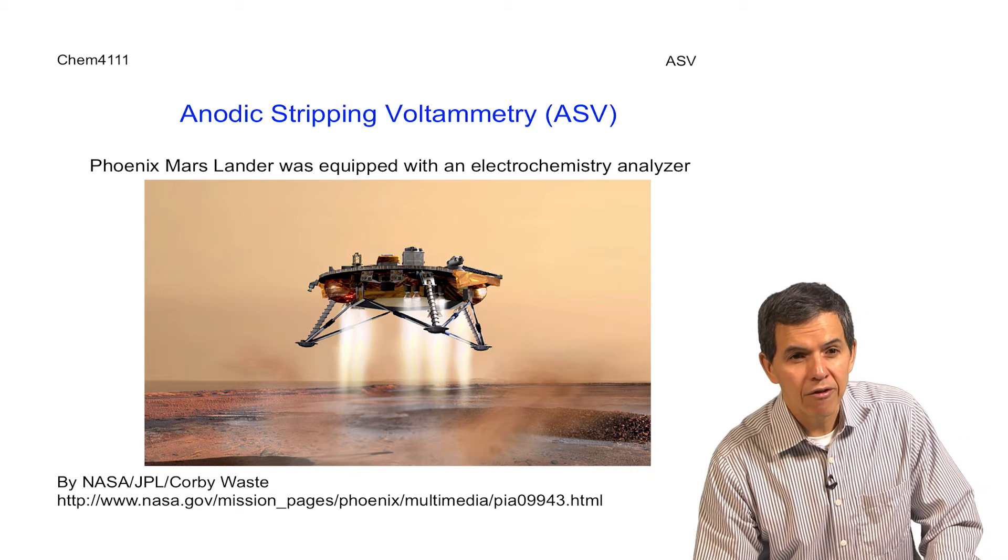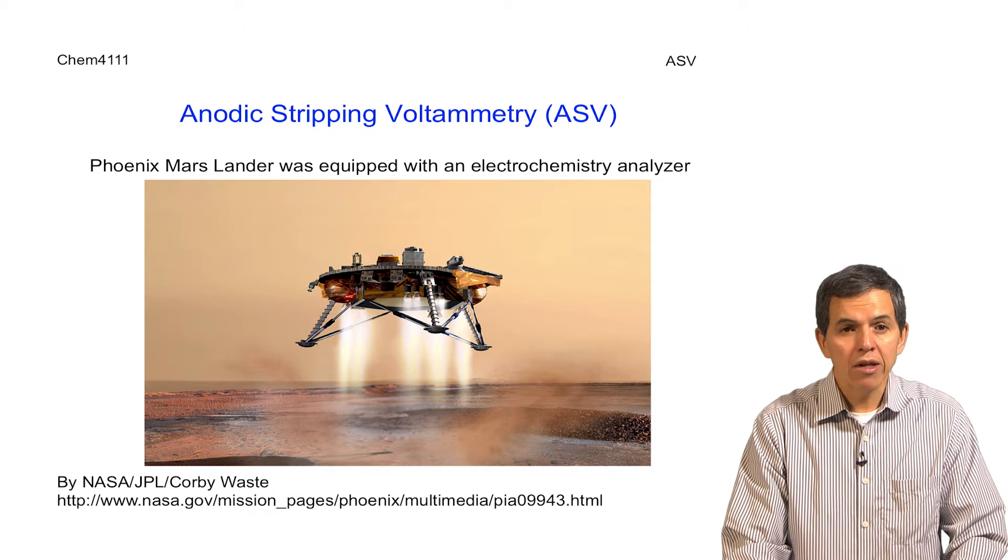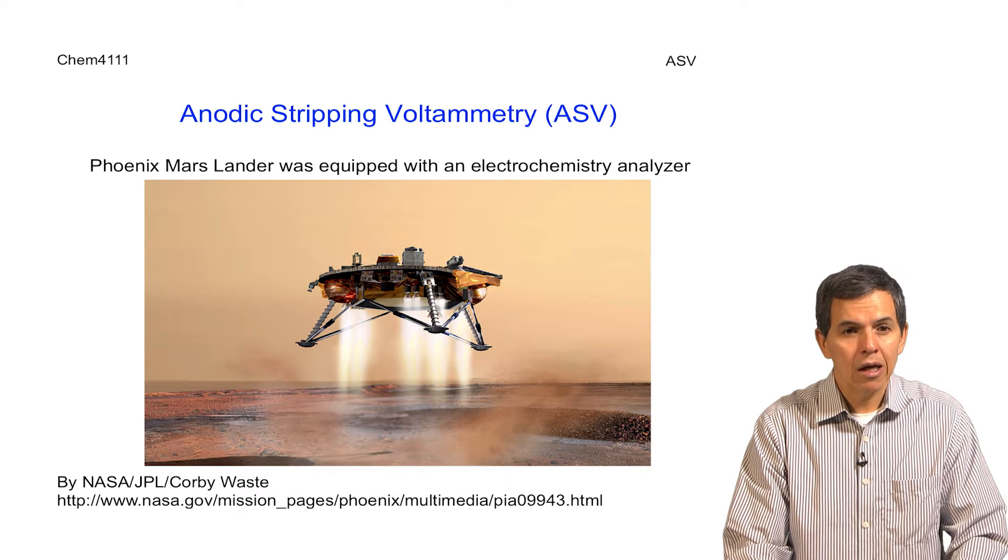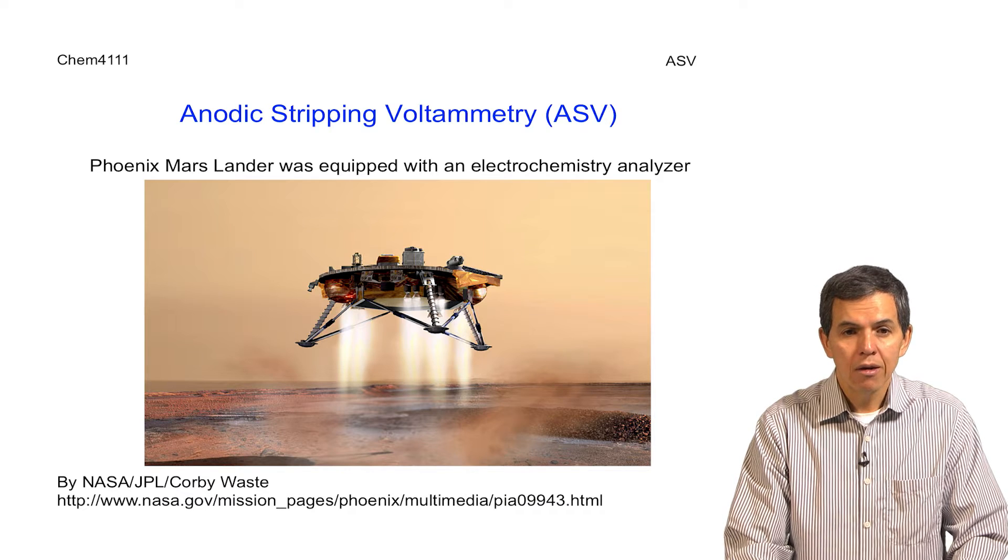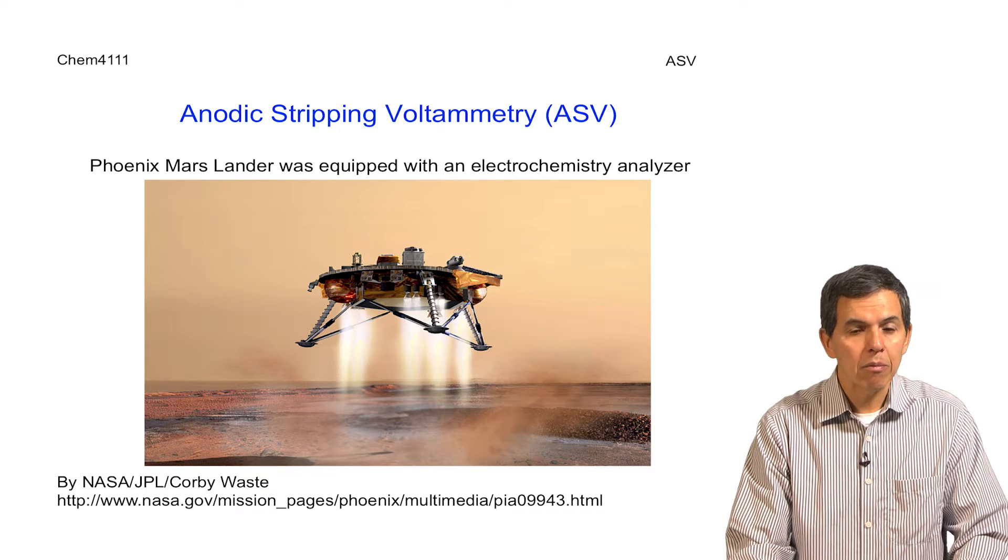Here's a picture of the Phoenix Mars lander that was equipped with an electrochemical analyzer. Not surprisingly, one of the analyzers was an ASV component that allowed to determine how different metals and species exist on the surface of the red planet.